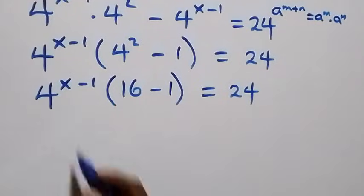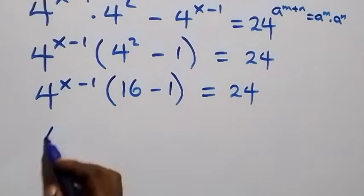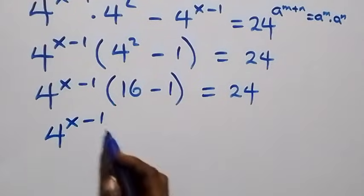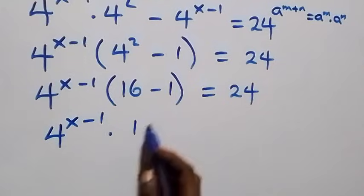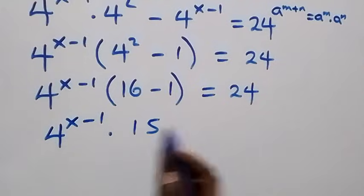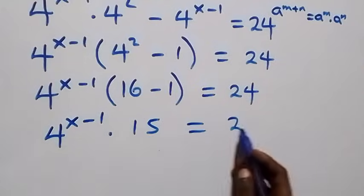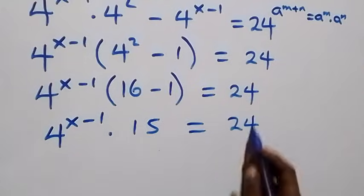That is, this becomes 4 raised to power x minus 1, times 15, equals to 24 from here.